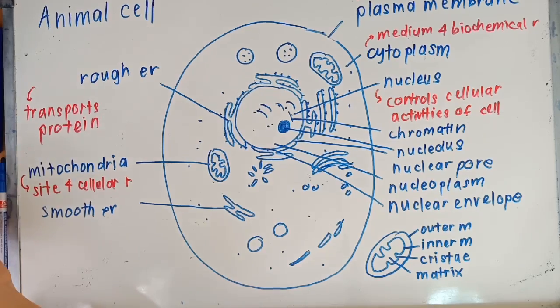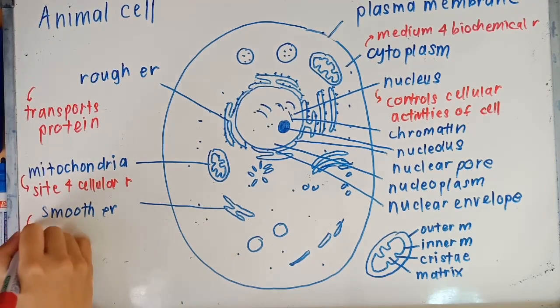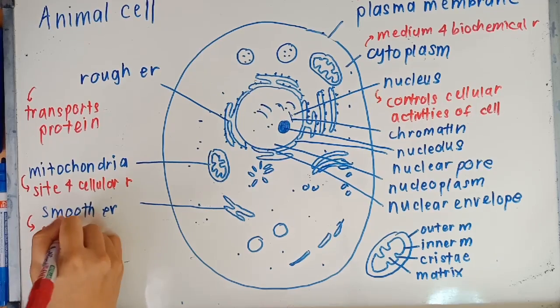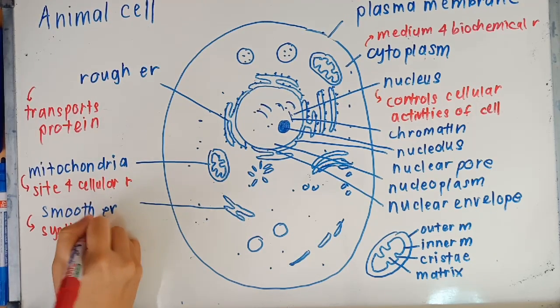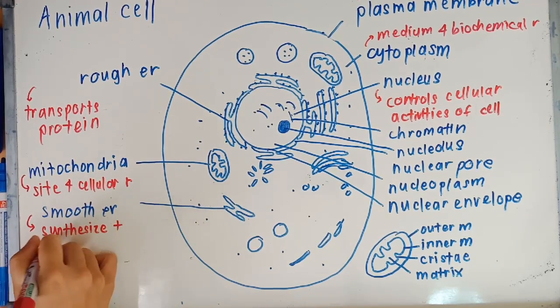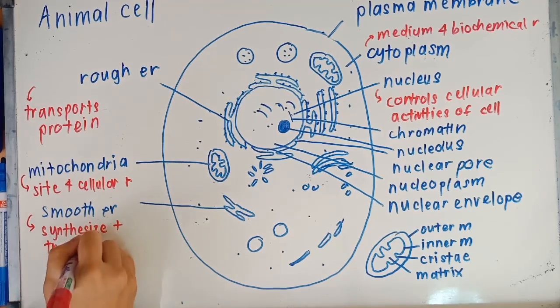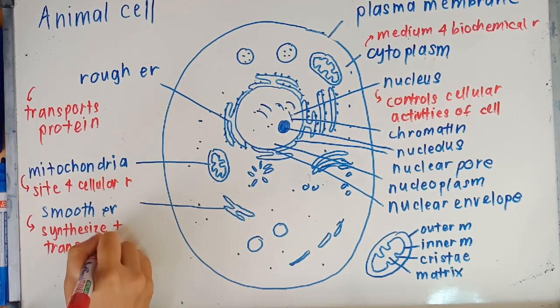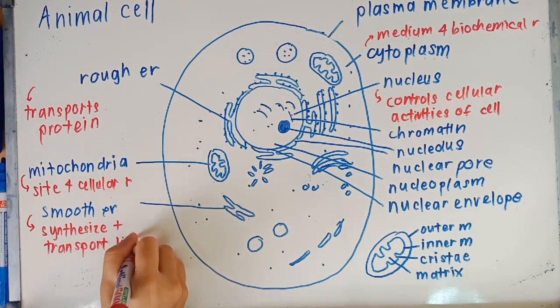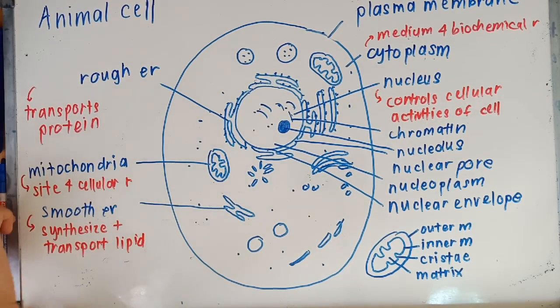Next we'll take a look at the smooth ER. Smooth ER looks like the rough ER except that it doesn't have all those tiny dots around it - it is smooth and it is not connected to the nucleus. The function of the smooth ER is that it synthesizes and transports lipid. It synthesizes and then transports it, while for rough ER it only transports protein because ribosome essentially synthesizes protein.